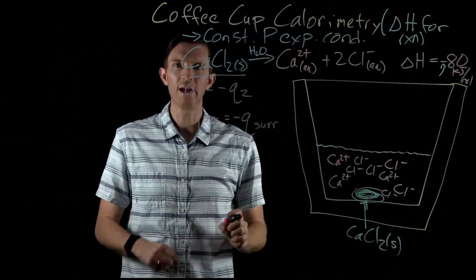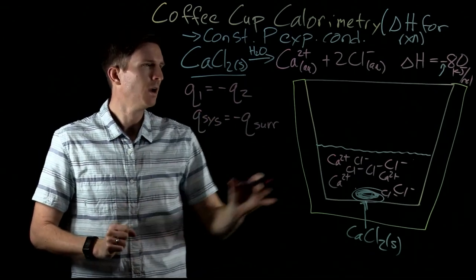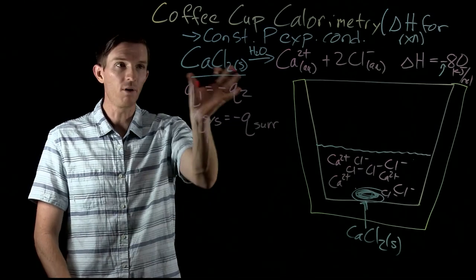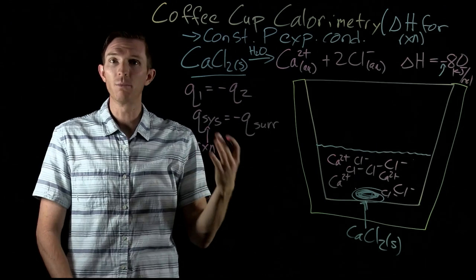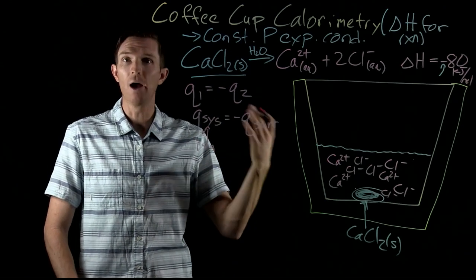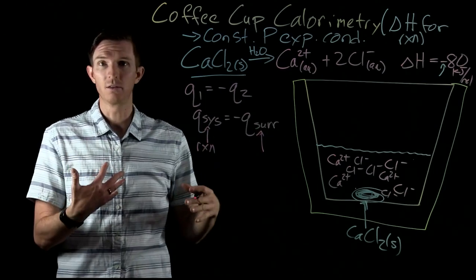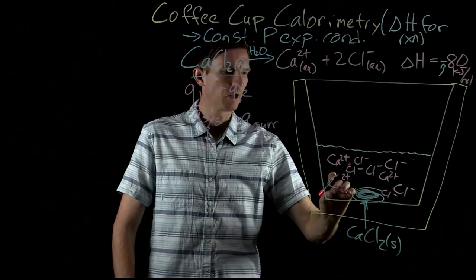Now remember, we define our system as what we're studying, the lens that we're looking at with regards to energy change. Well, the energy change we're talking about here is our system of our reaction. So our reaction is the system that we're observing, that we're trying to look at how its change in energy occurs. The surroundings is what is around our system. Well, what's around our system? Our solution.